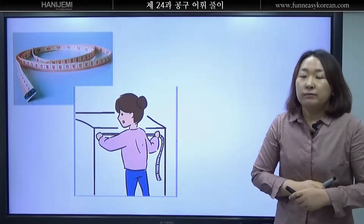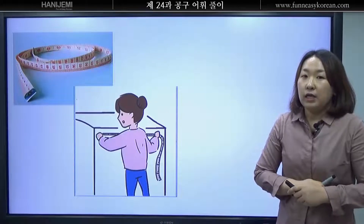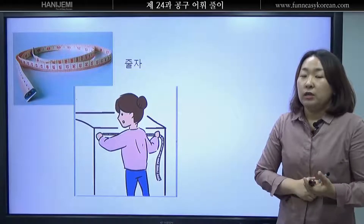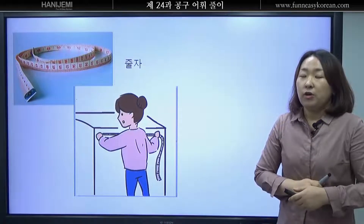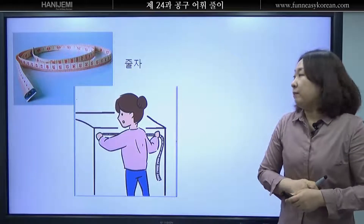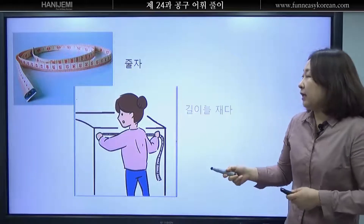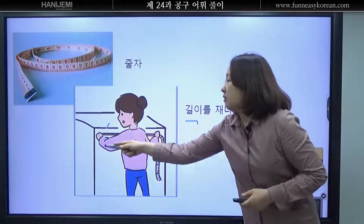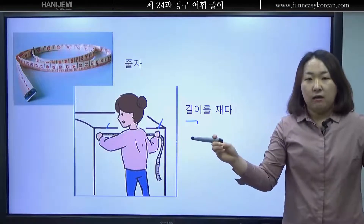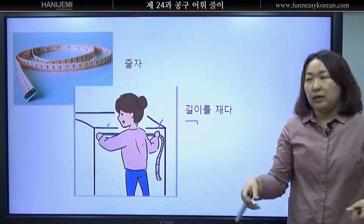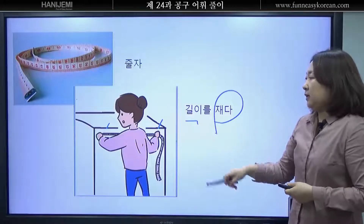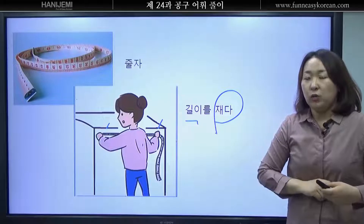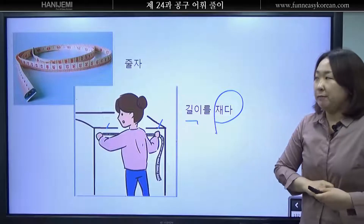자 여러분 이것은 무엇입니까? 네 줄자입니다. 줄자를 어떻게 사용합니까? 줄자가 왜 필요합니까? 네 길이를 잽니다. 여기에서 여기까지 길이가 얼마나 됩니까? 길이를 재다 라고 합니다. 무엇으로? 줄자. 줄자로 길이를 잽니다.